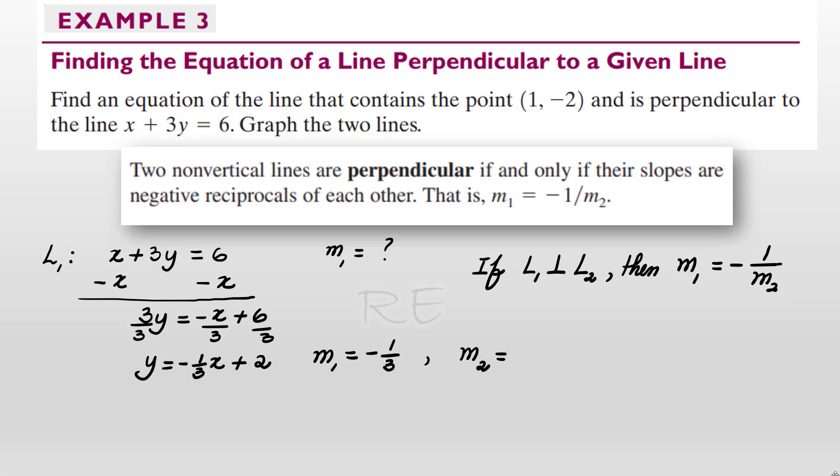Therefore, M2 is the negative reciprocal of M1. So we flip and change the sign and M2 becomes positive three.